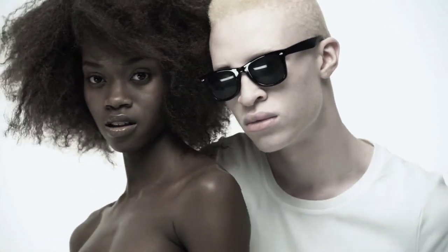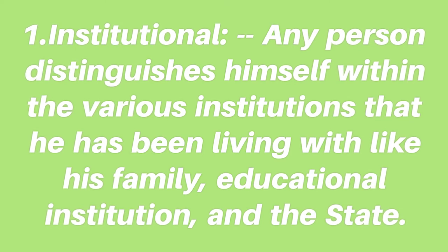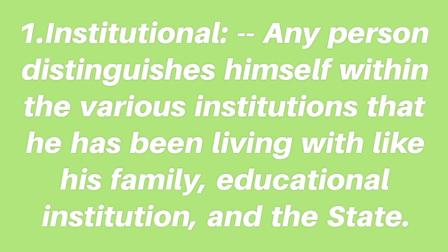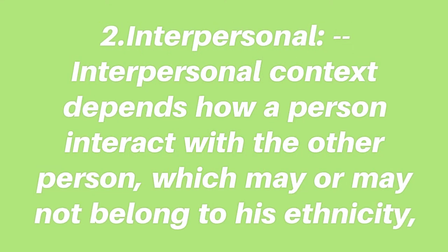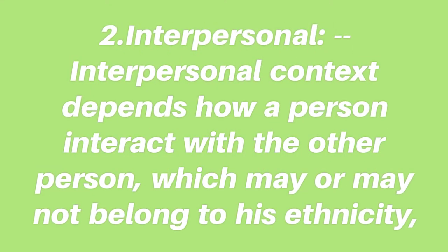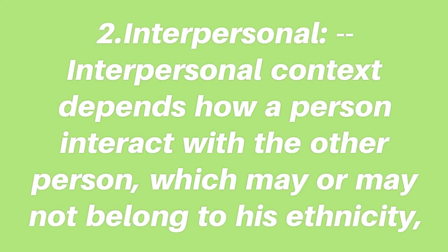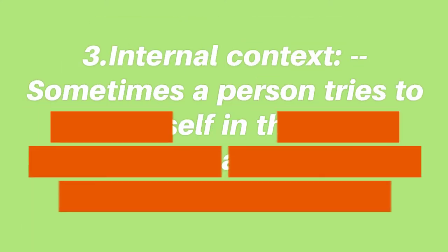We differentiate our identity depending upon the following contexts. First, institutional: any person distinguishes himself within the various institutions he lives with, like his family, educational institution, and the state. These institutions influence the person's beliefs and categories of differences create over time. Second, interpersonal: interpersonal context depends on how a person interacts with others who may or may not belong to his ethnicity, gender, or sexual orientation. Every person follows common guidelines to define norms and create categories.